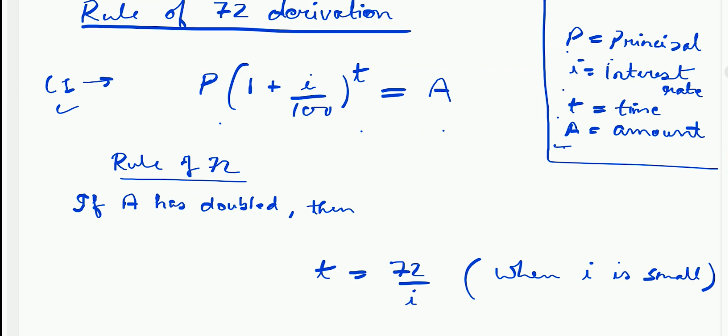Rule of 72 is an approximation of above formula. It states the time taken for principal to double at the rate i is approximately equal to 72 by i. Here, condition is that i should be small, ideally less than 25%.